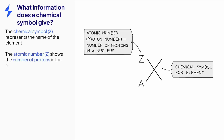The letter Z represents the atomic number of the element. Exam boards are adopting the International Union of Pure and Applied Chemistry convention, which means that the atomic number should be the top number on a chemical symbol. You might see the atomic number at the bottom in older textbooks, revision guides, and resources. Remember, the atomic number is always the smallest number.